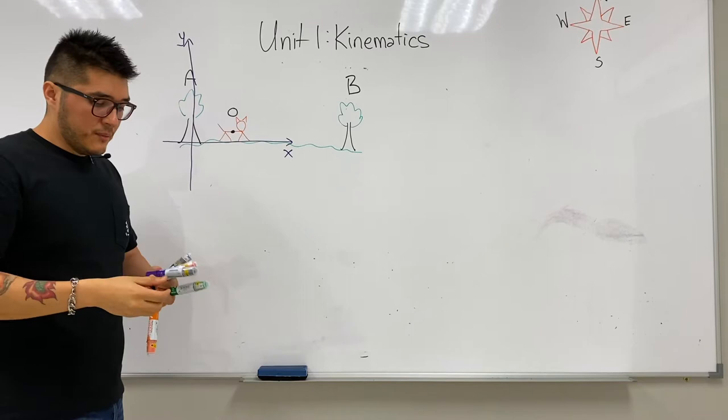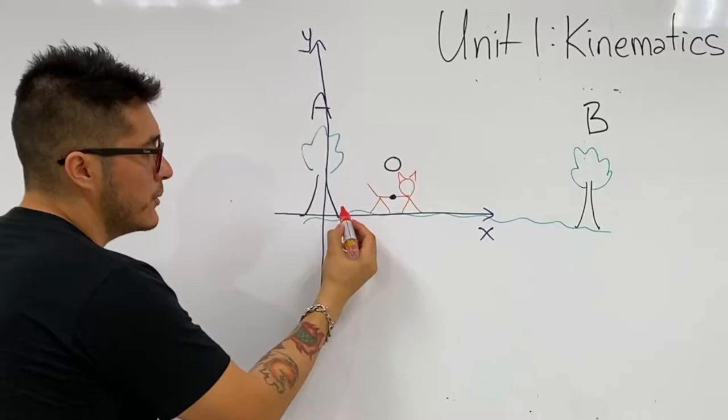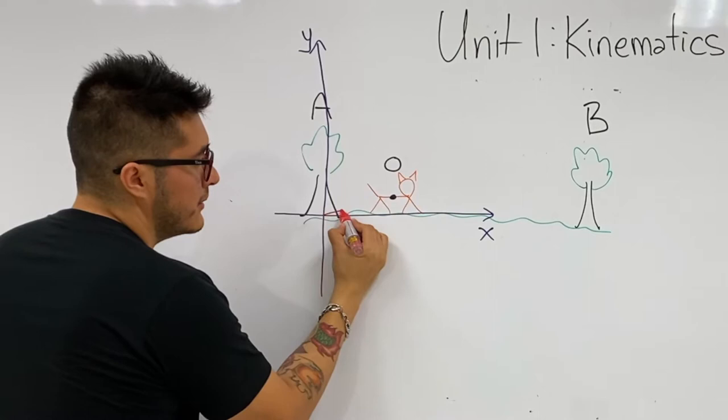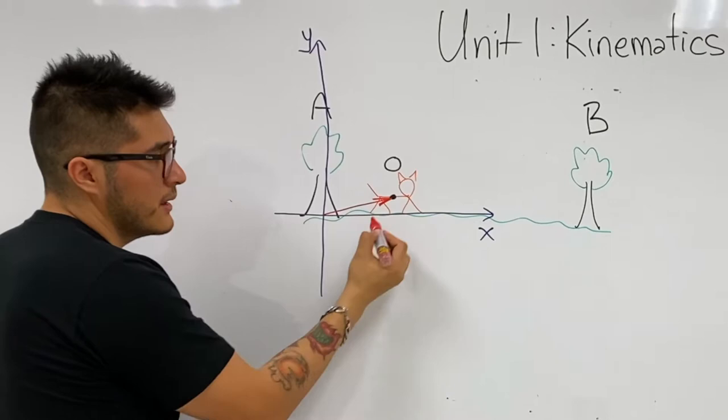Once we place it there, we can draw a position vector which is from the origin to where the cheetah is at that time and in the direction towards the cheetah. There's the first position vector.